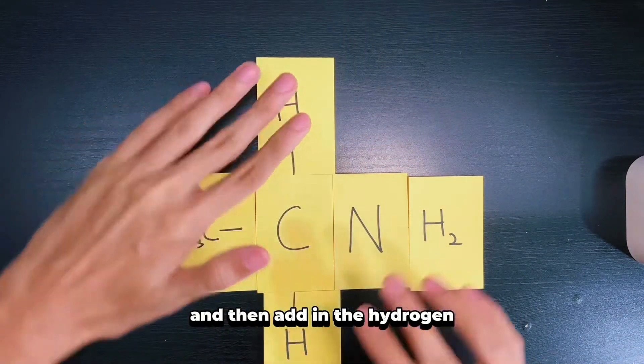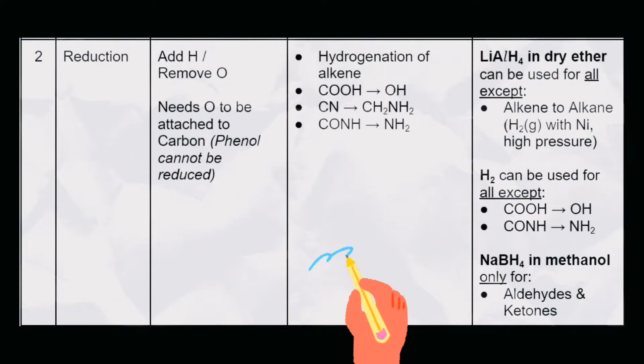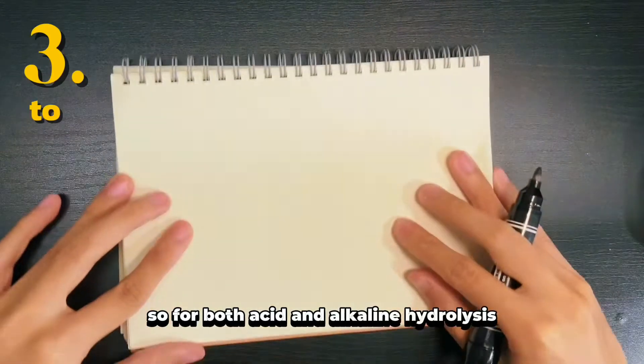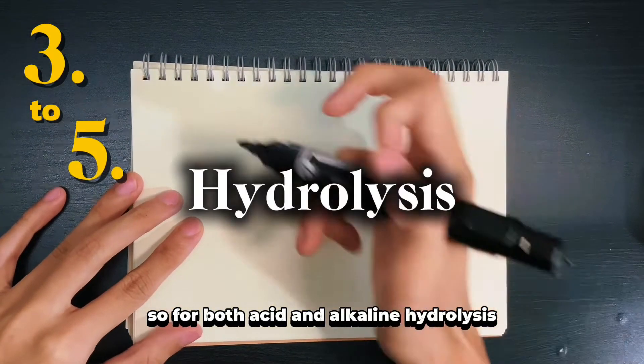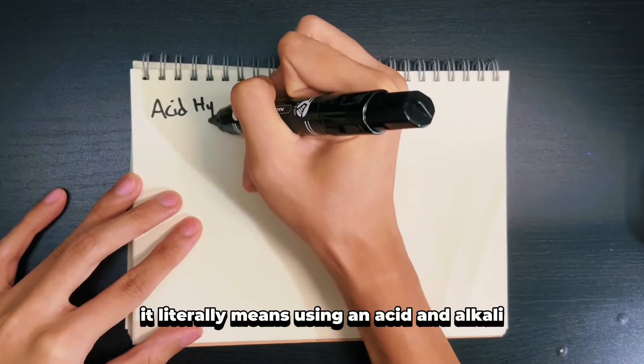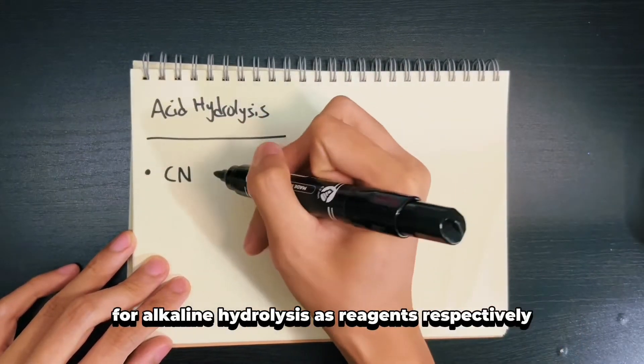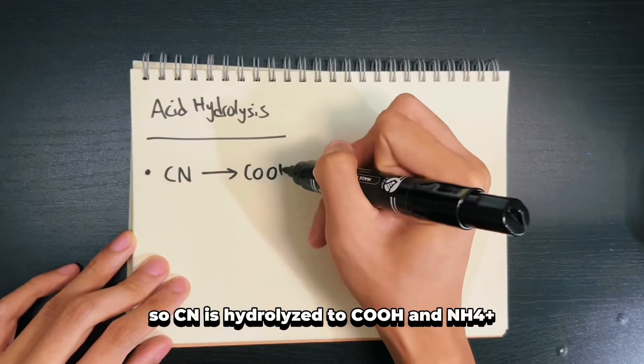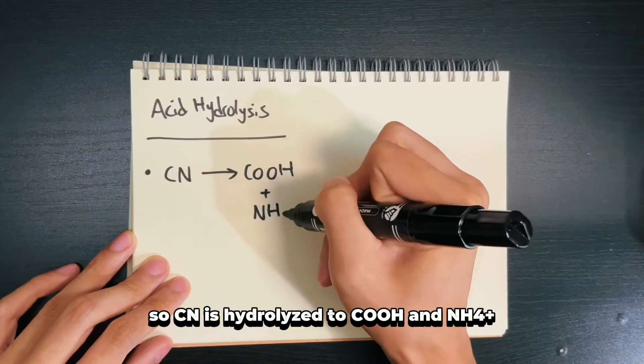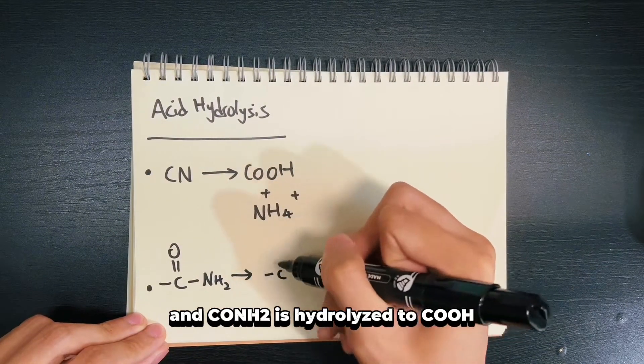For both acid and alkaline hydrolysis, nitrogen is usually present. If it's an acid hydrolysis, it literally means using an acid. CN is hydrolyzed to COOH and NH4+, and CONH2 is hydrolyzed to COOH.